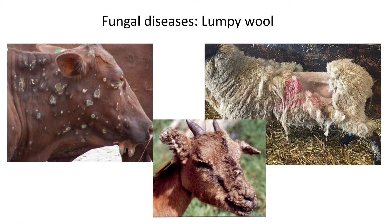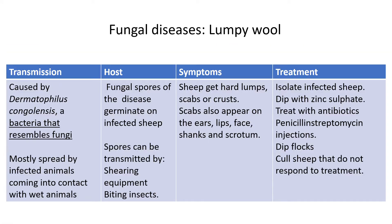Lumpy wool is a topical infection and is actually caused by a bacterium that resembles a fungus — that's why it's classified under fungi, but it's technically a bacterium. It is mostly spread by infected animals coming into contact with other animals, especially wet animals, as this organism loves wet and hot conditions.